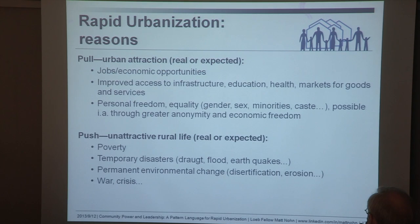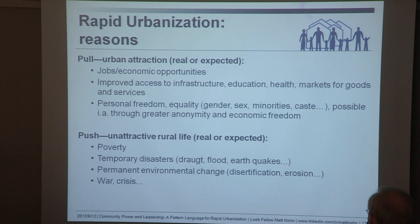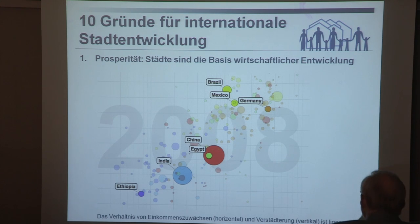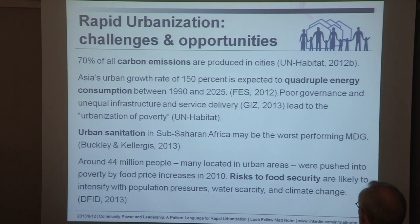This is why I'm interested in developing a pattern language for rapidly urbanizing regions, while learning from regions that have already urbanized. Cities are urbanizing because of their attractiveness or the unattractiveness of rural life — due to poverty, crisis, and various conditions. The more urbanized a country is, the higher its income, on a logarithmic scale. About 80% of global GDP is generated in cities, making them an important means for poverty reduction. On the other hand, 70% of carbon emissions are also produced in cities.